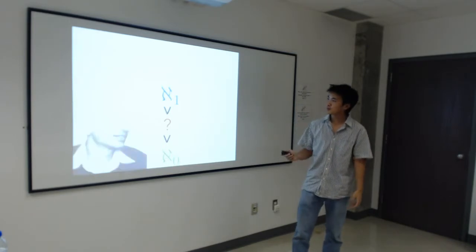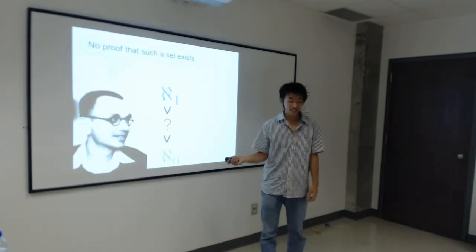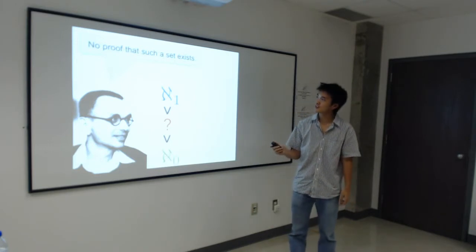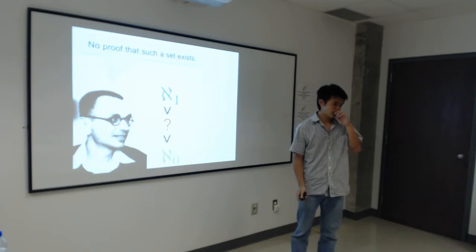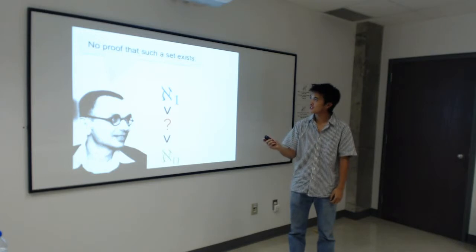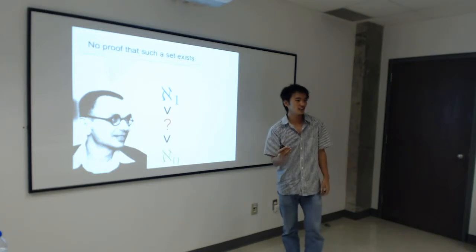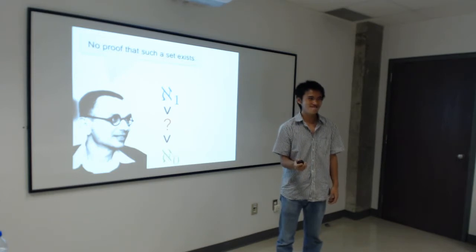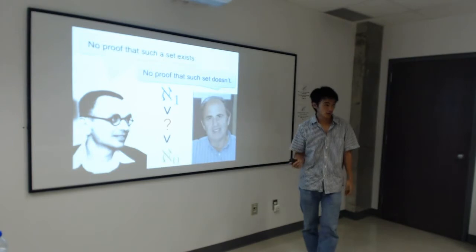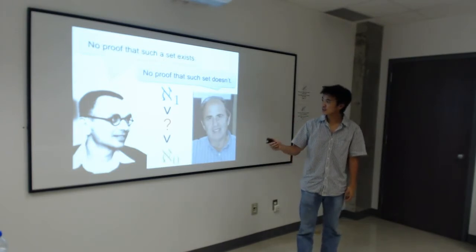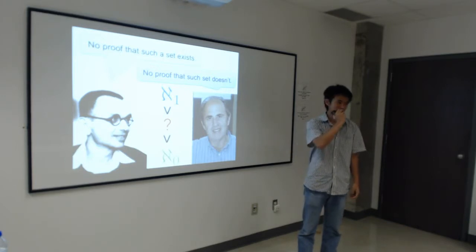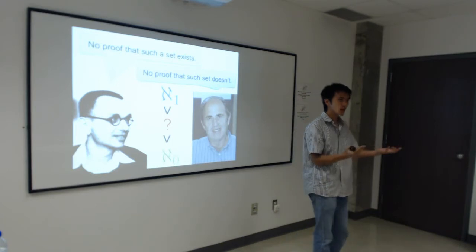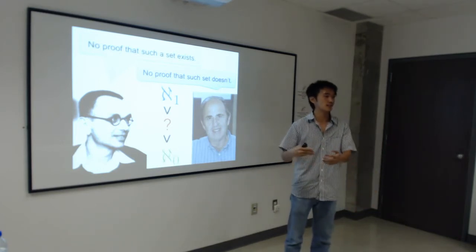The answer came in two parts. The first part was provided by Kurt Gödel in 1940 — it took 40 years. Gödel proved that there was no proof that these intermediate sets exist. Read carefully: he didn't prove that the sets didn't exist; he proved there was no way of proving that they did. The second part came in 1963 by Paul Cohen, another 23 years later. Cohen showed that there was also no proof that the sets didn't exist. So does it exist or not? These results say there's basically no way of saying whether it exists or not.